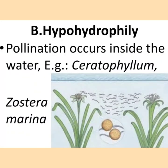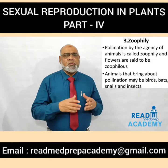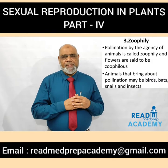What is hypohydrophily? Pollination occurs inside the water. Examples: Ceratophyllum and Zostera marina. Here you can see on the right side the pollination that is occurring within the water.